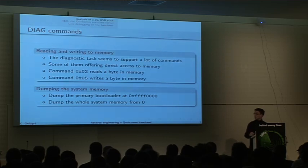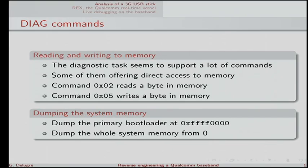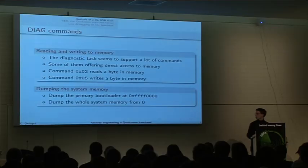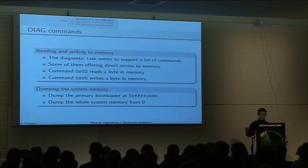Some commands offer direct access to the baseband memory. For example, command 2 reads a byte in memory, and command 5 writes a byte in memory. From this it's directly possible to dump the bootloader byte-by-byte at address 0xFFFFFFF0, which is the entry point in ARM. You can also dump the whole system memory from zero because it's loaded in RAM. There is also a second mode accessible from the diagnostic mode called the downloader mode.